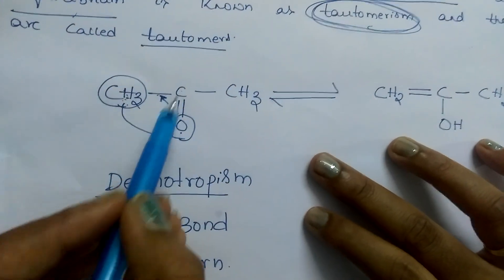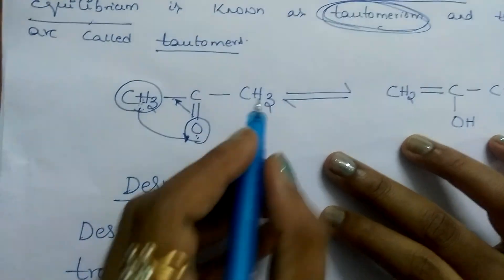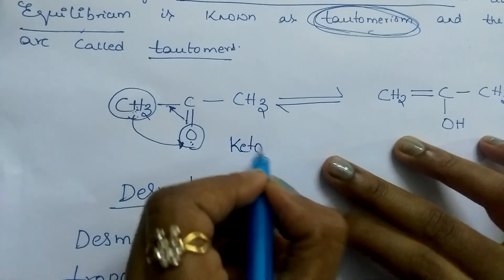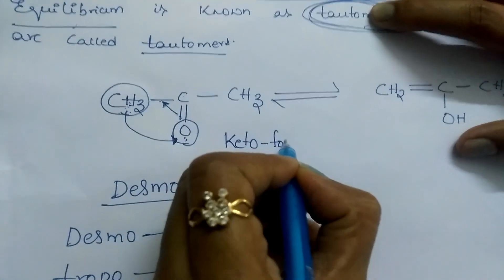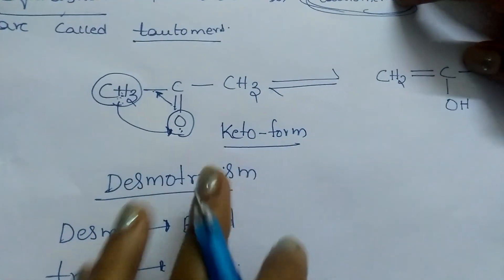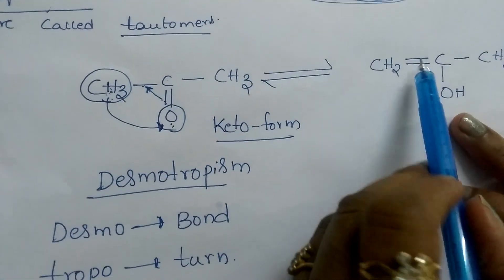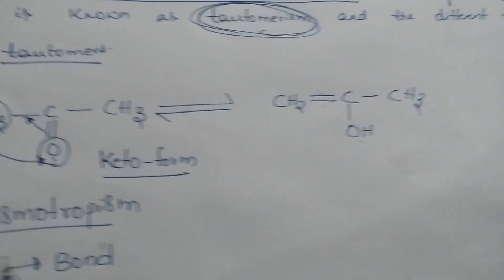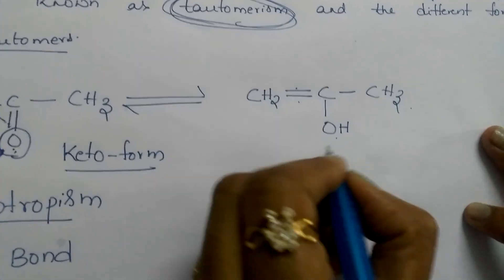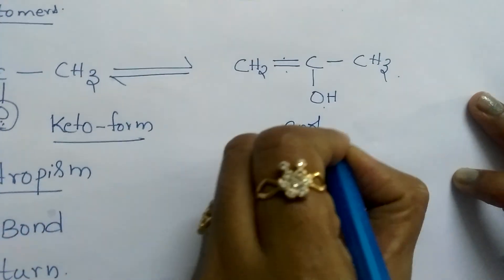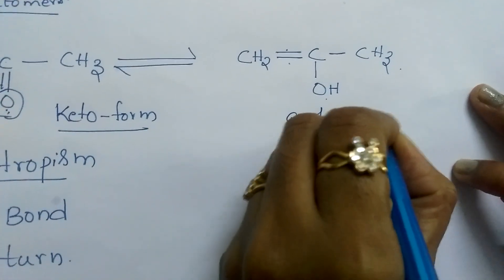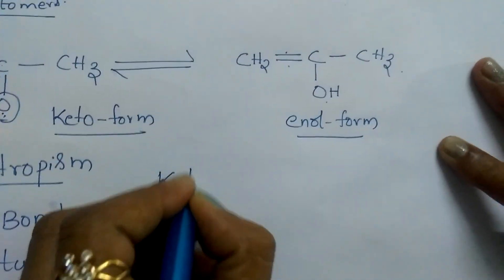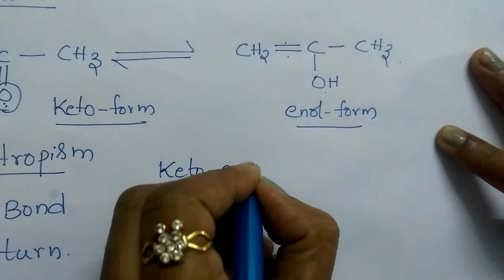Because of the presence of C double bond O, we call this isomer the keto form. And because of the presence of this double bond and the alcohol group, we call it the enol form. This phenomenon we call keto-enol tautomerism.